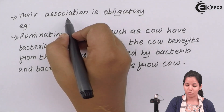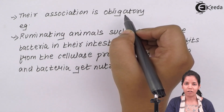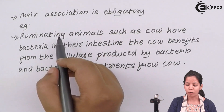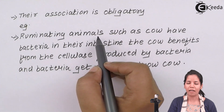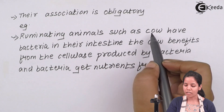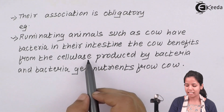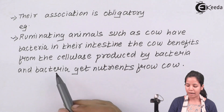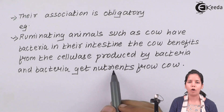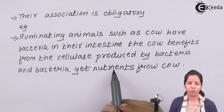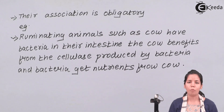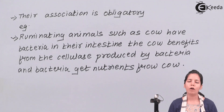This mutualism association is obligatory or compulsory just for survival purposes. An example would be ruminating animals — animals that graze on farms and fields, such as cows, which have bacteria in their intestines. The cow benefits from this bacteria as it produces cellulase enzyme, and in return the bacteria gets nutrients from the cow. The cow eats food which gets digested and produces nutrients that the bacteria gain. In this association, both the bacteria and the cow are benefited — the cow gets cellulase enzyme and the bacteria gets food.